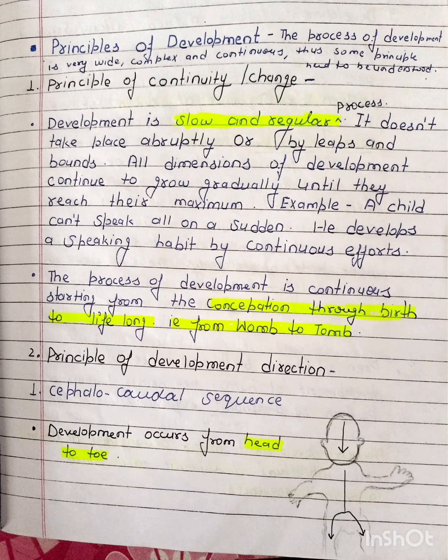The first principle is continuity or change — development is continuous. It starts from the womb of the mother and continues till death. Development is a slow and regular process. It does not take place abruptly or by leaps and bounds.